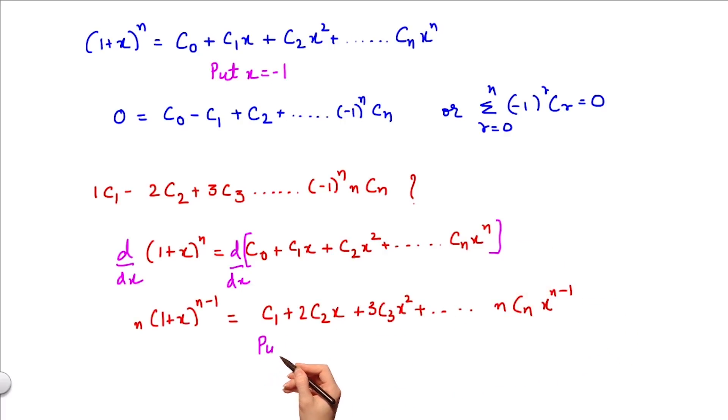In this series, if I put x equals minus 1, I get my desired sum which is equal to 0. That is, summation (-1)^r rcᵣ where r varies from 1 to n equals 0.